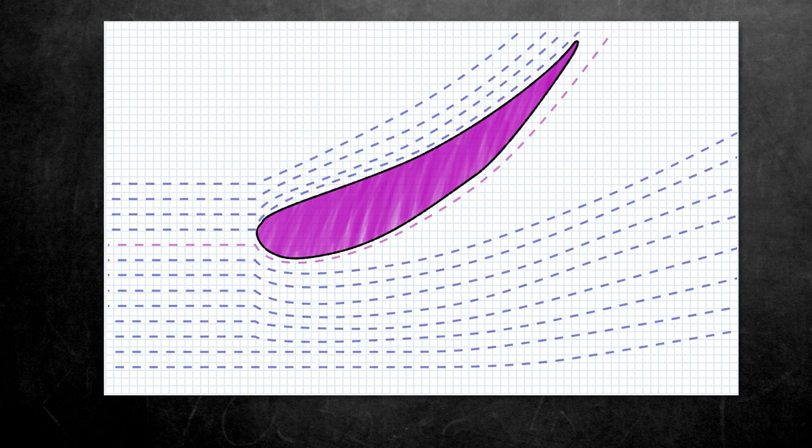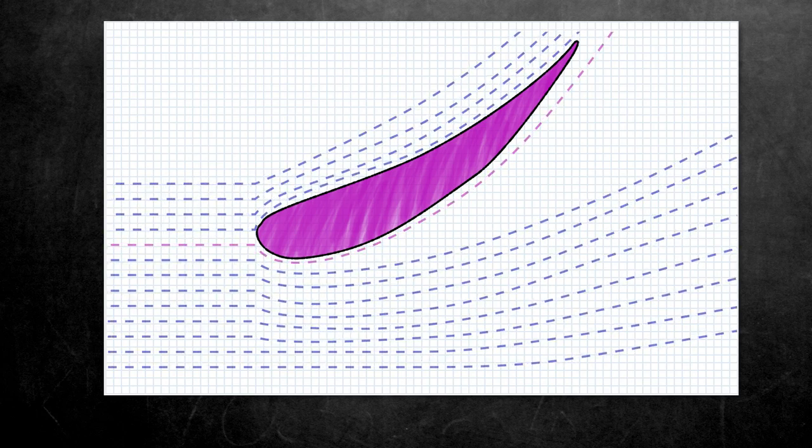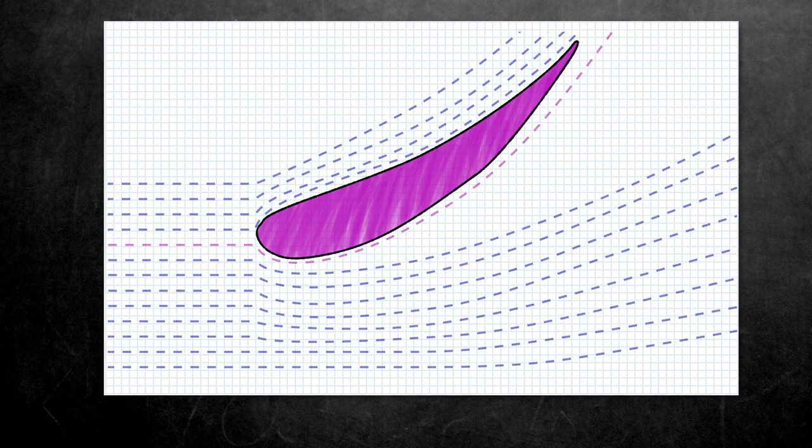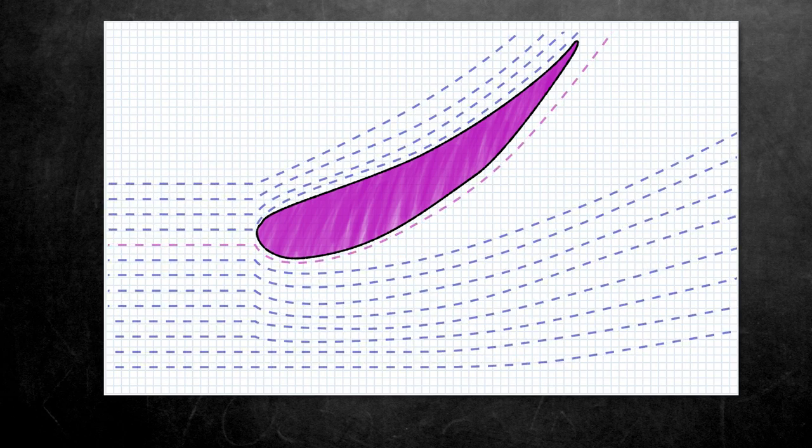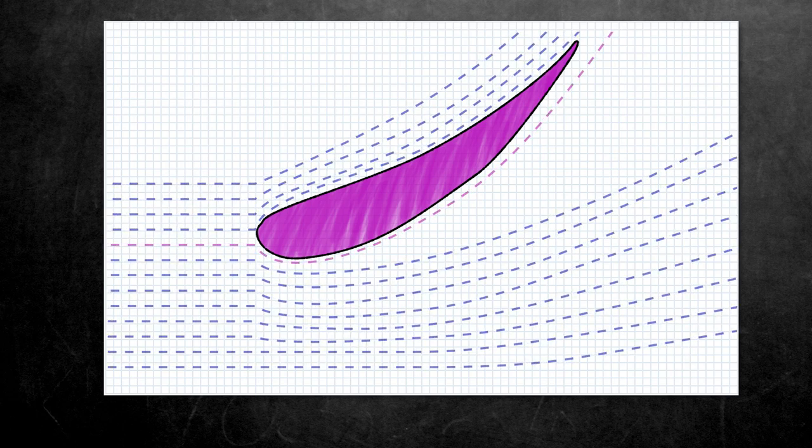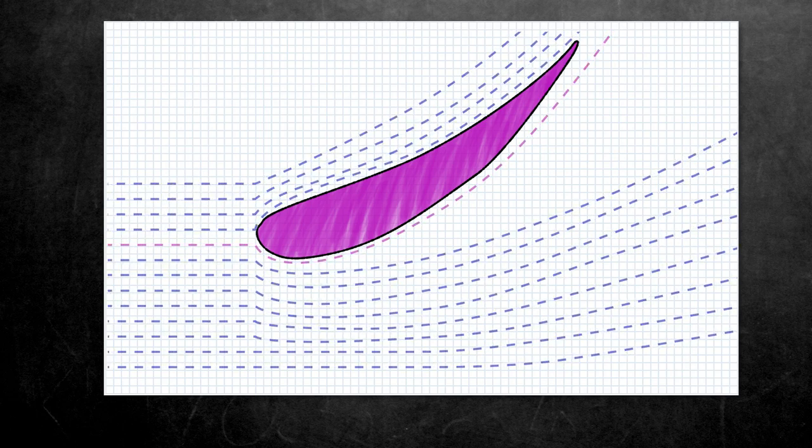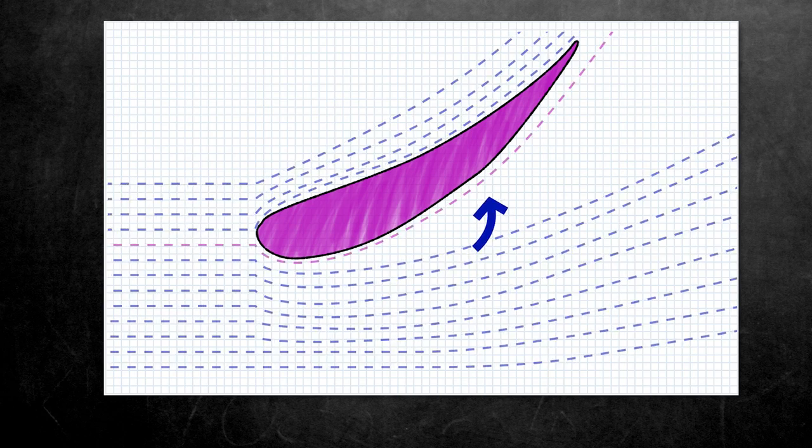So how do we resolve the problem of separated air flows ruining our nice efficient downforce? Well, we could just not tilt the wing so aggressively. But that's giving up. We need to find a way to keep this fast flowing energetic air attached to the surface for longer. And the answer is vortices.